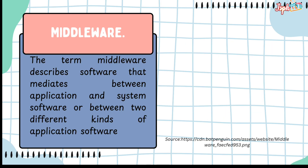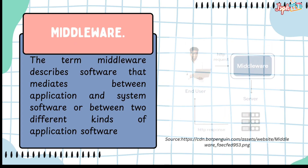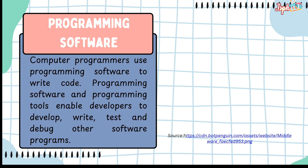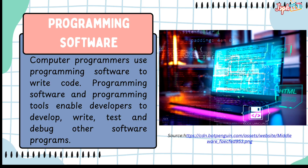Next, middleware — software that mediates between application and system software, or between two different kinds of application software. For programming software, computer programmers use programming software to write code. Programming software and programming tools enable developers to develop, write, test, and debug other software programs.